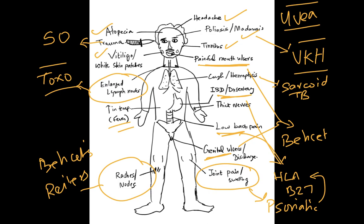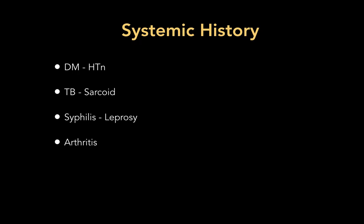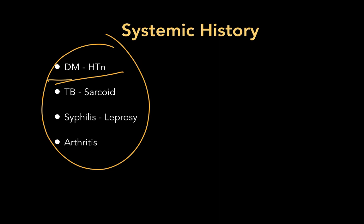Joint pain and swelling is important as it relates to psoriatic arthritis, which is also HLA-B27 associated. Rashes and nodes can present in Reiter's syndrome and also in Behcet's disease. Our patient did not have any of these history findings — there was nil relevant uveitis-related history. The past history showed no ocular surgeries, no previous topical or oral medications except those taken for the current complaint, no diabetes or hypertension, no TB or sarcoid, no syphilis or leprosy, and no history of arthritis.